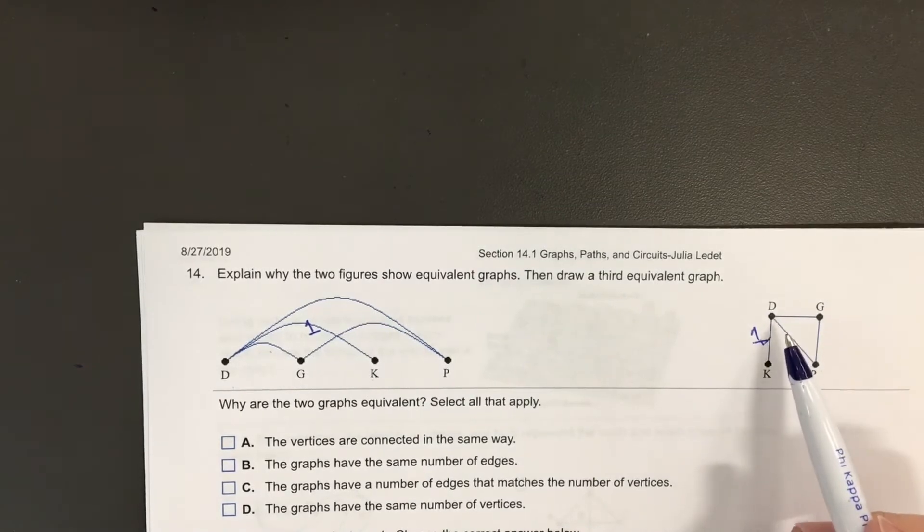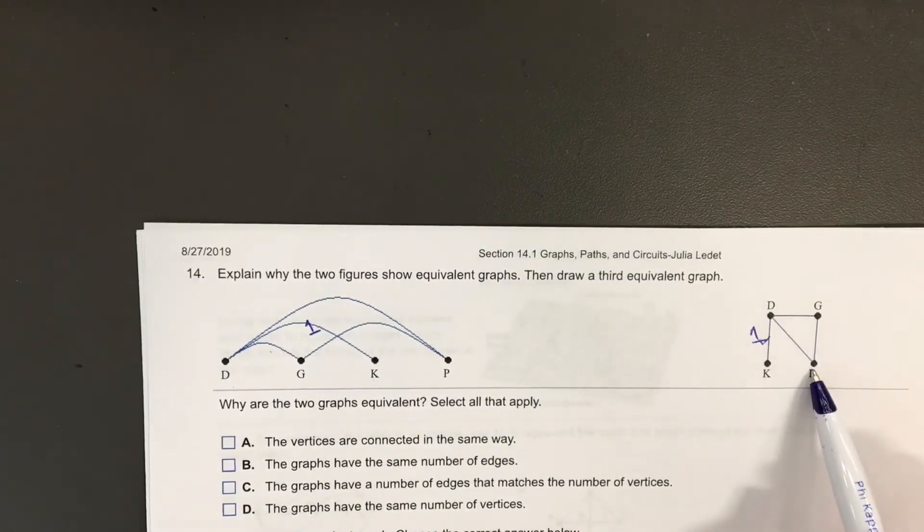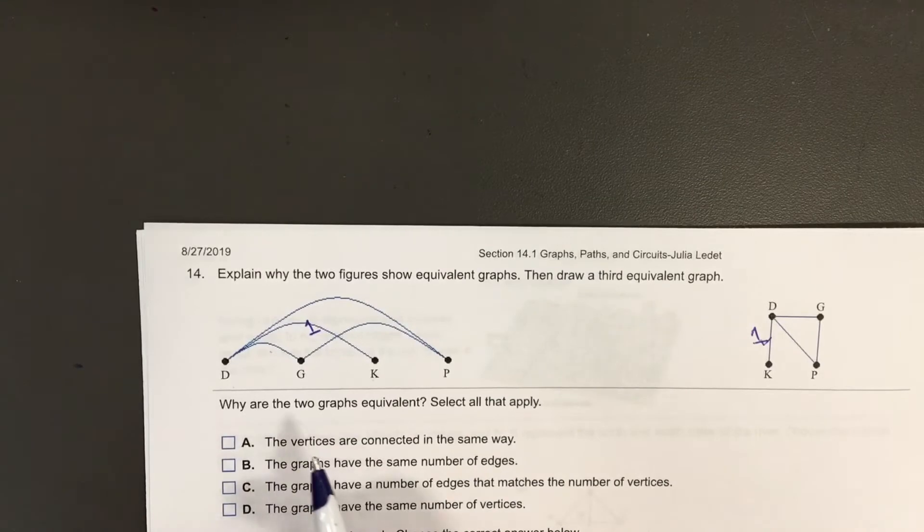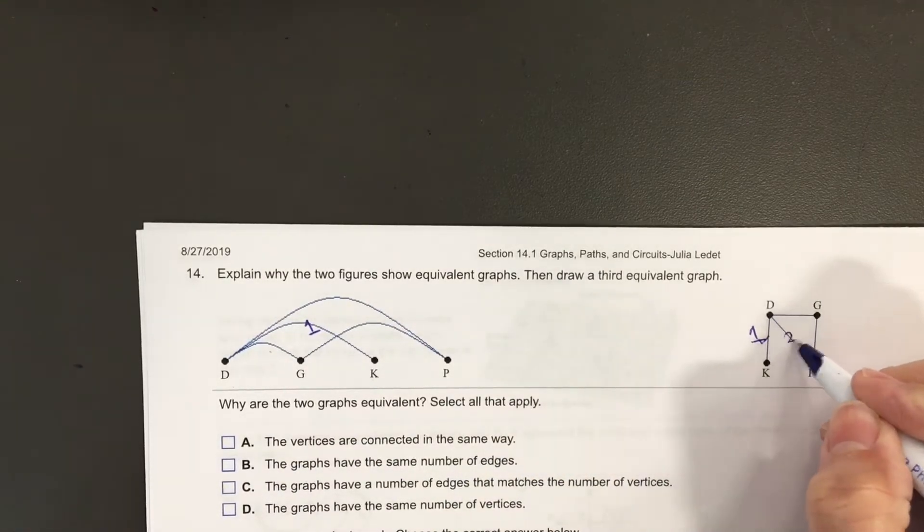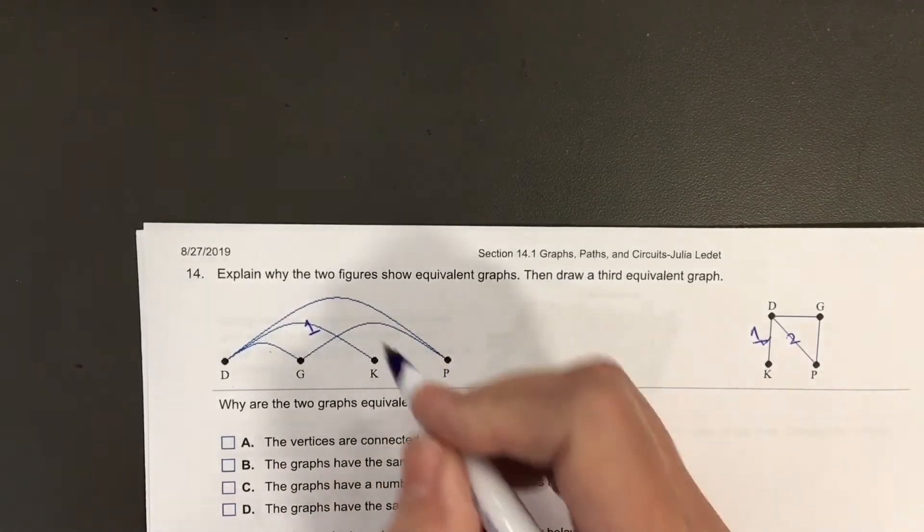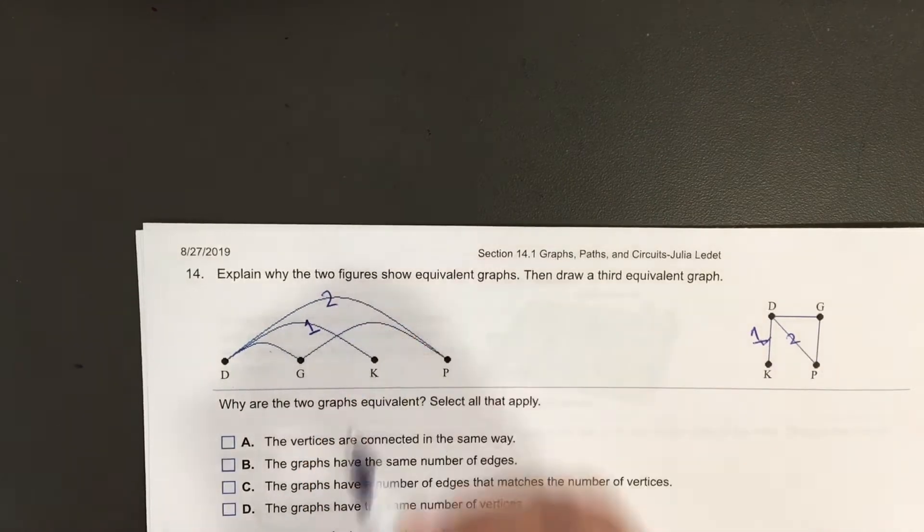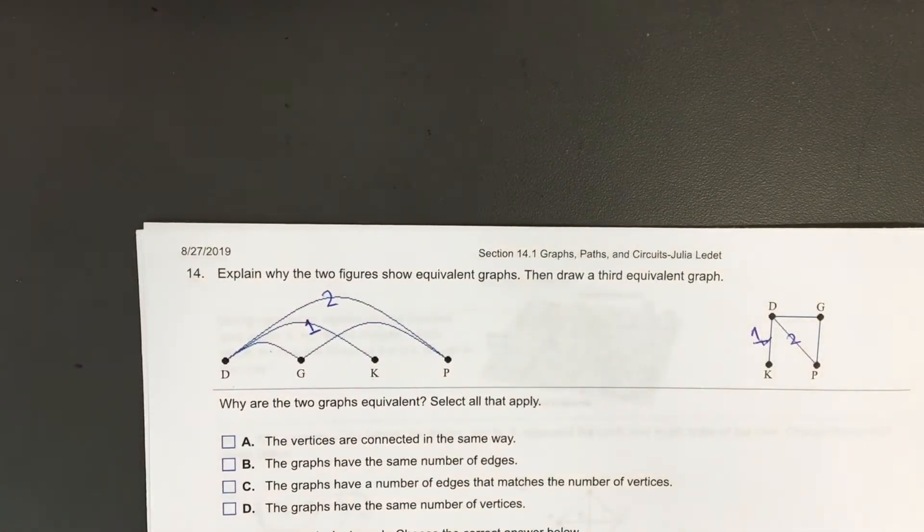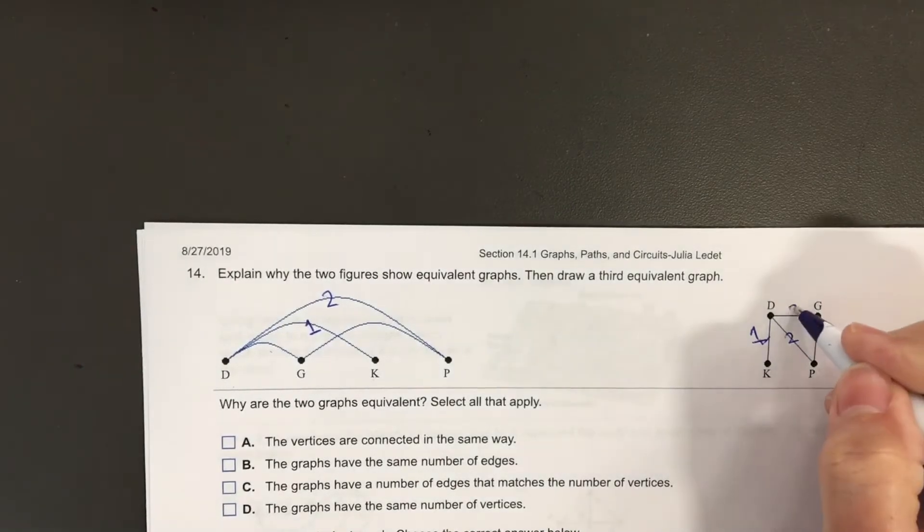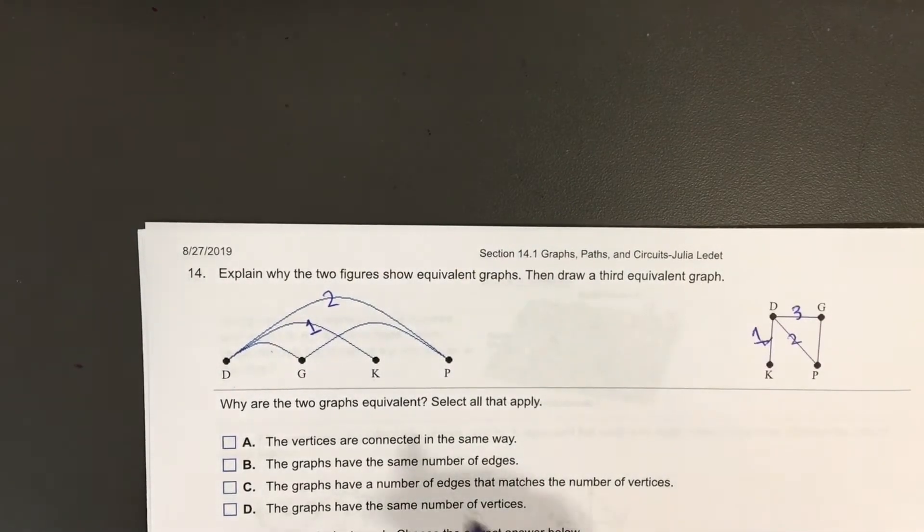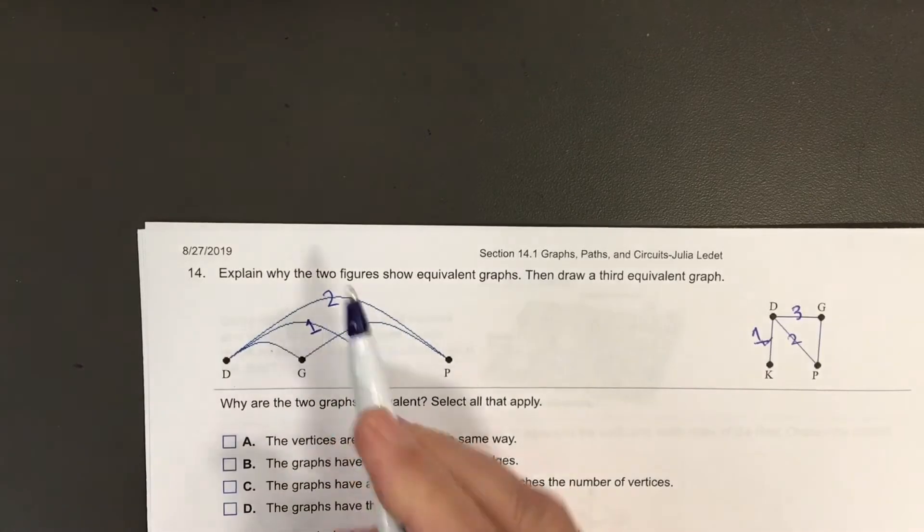The one on the right has an edge from D to P. The one on the left, we'll call that edge number two. D to P, the one on the left has that as well. D to K, I'll call that edge number three.